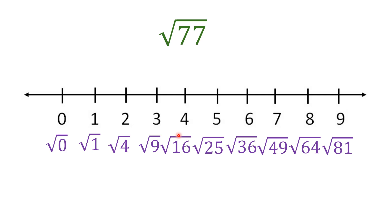Another one: square root of 77. It falls in between square root of 64 and square root of 81. Observe that 77 is much closer to 81 than to 64 — it's way far from 64 and close to 81. So we put it here, a little closer to 9 on the number line.